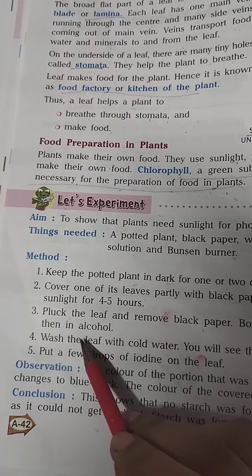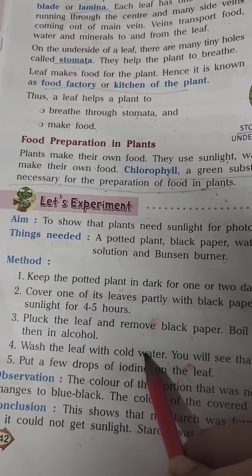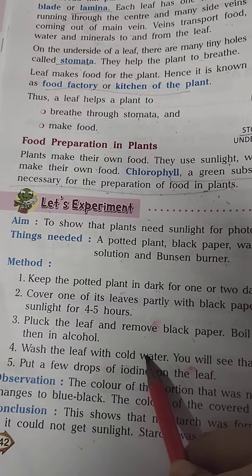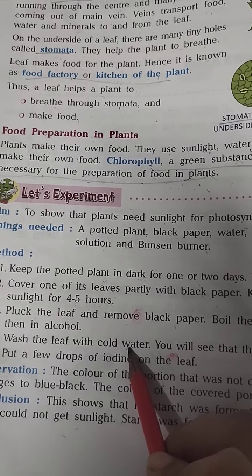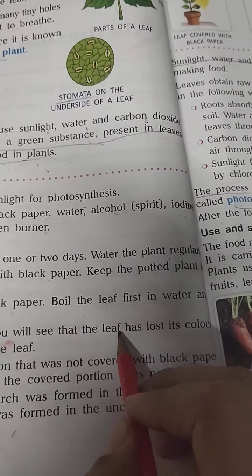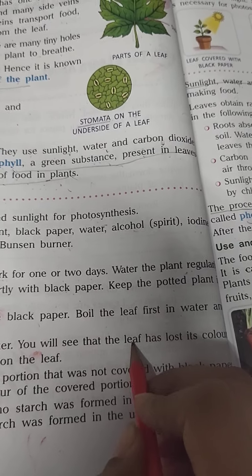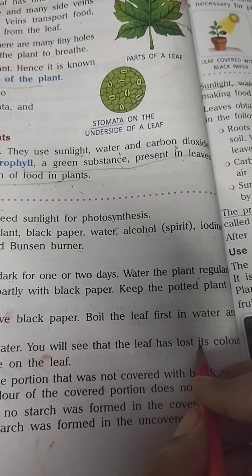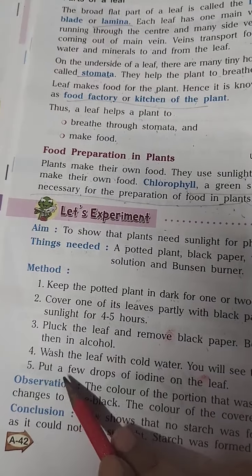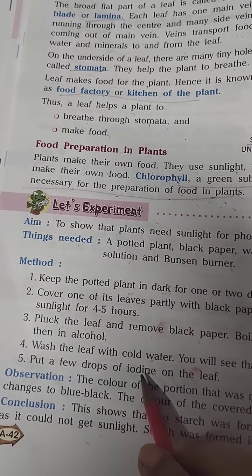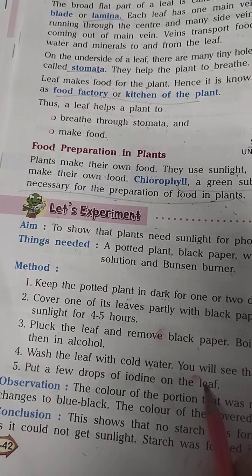Fourth step: wash the leaf with cold water. After boiling in water and alcohol, you will wash the leaf with cold water. You will see that the leaf has lost its color. Then put a few drops of iodine solution on the leaf.